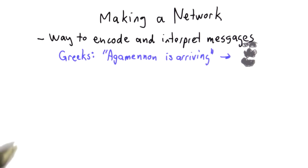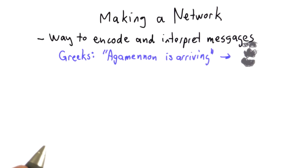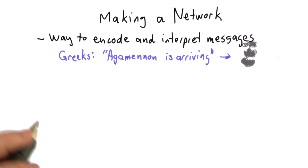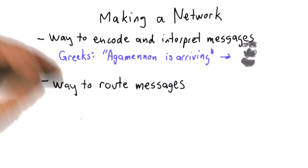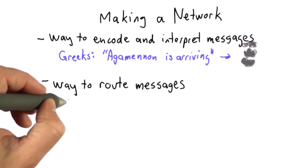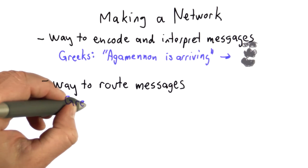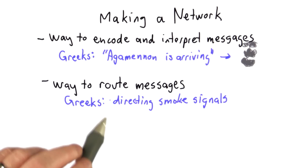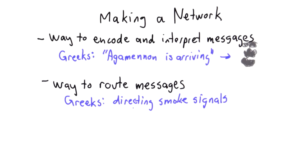So these are the things we need to make any network. We need some way to take the messages we want to send and encode them so they can be transmitted, and interpret them when they get to the other end. For the Greeks, the message was something like 'Agamemnon is arriving — get the ships to a safe place,' and they needed to encode that in a smoke signal. We need a way to route messages — a way for the receiver of the smoke signal to know the next place to send it. For the ancient Greek network, since smoke signals are not directional — they just go up in the air — there wasn't much to do here; everyone could see the message and they wanted to send it everywhere. If we want to send messages just between two points, this becomes a much tougher problem.